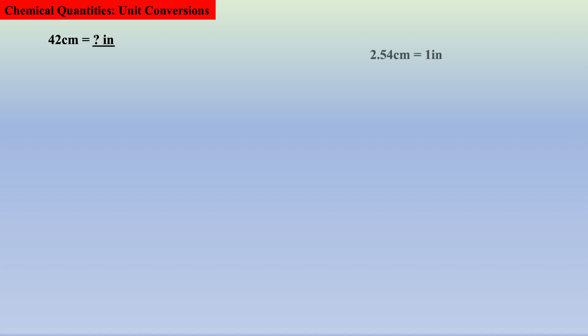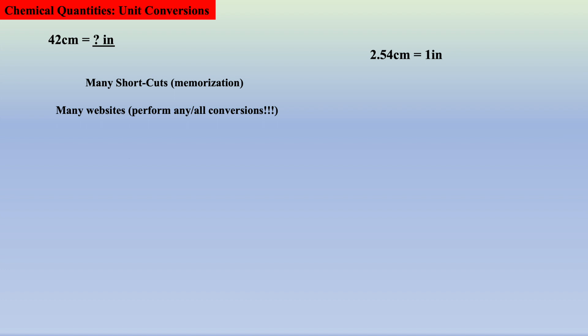Given 42 centimeters, we are asked how many inches is this, given 2.54 centimeters equals 1 inch. While the author realizes there are many shortcuts and even websites that will perform any conversion, we need to develop this imperative skill so we can apply it to more complicated chemistry exercises.